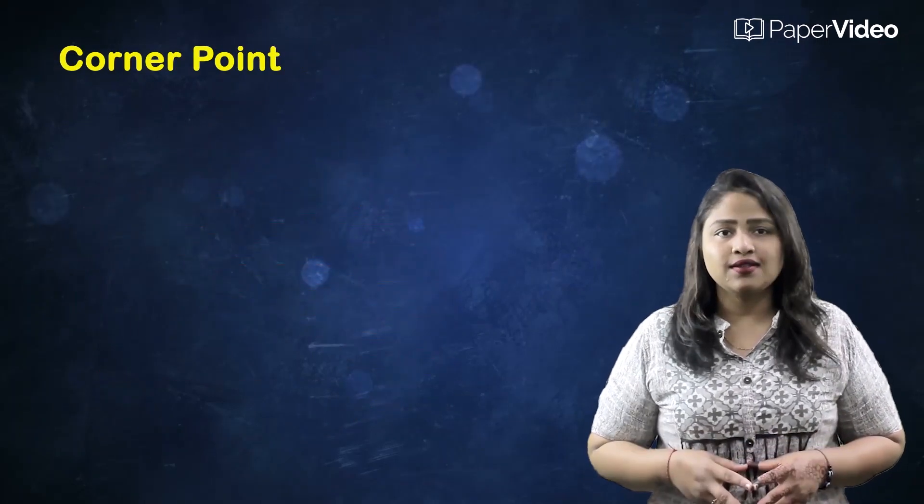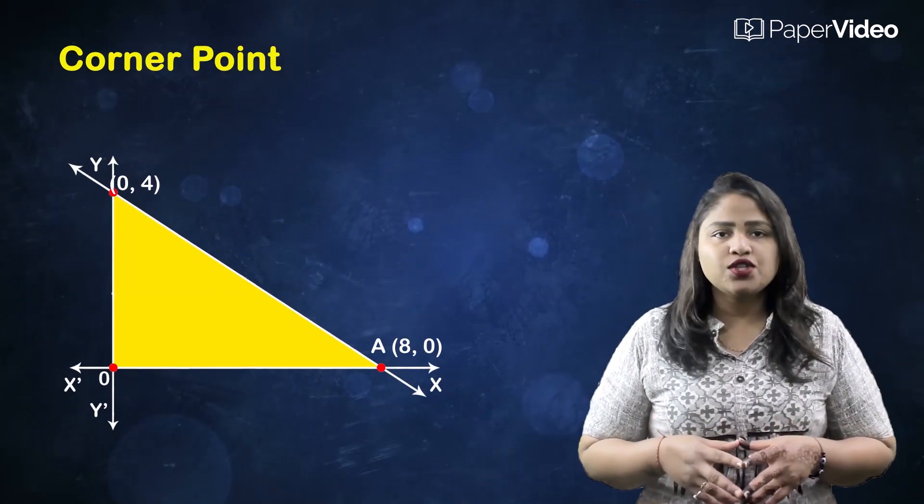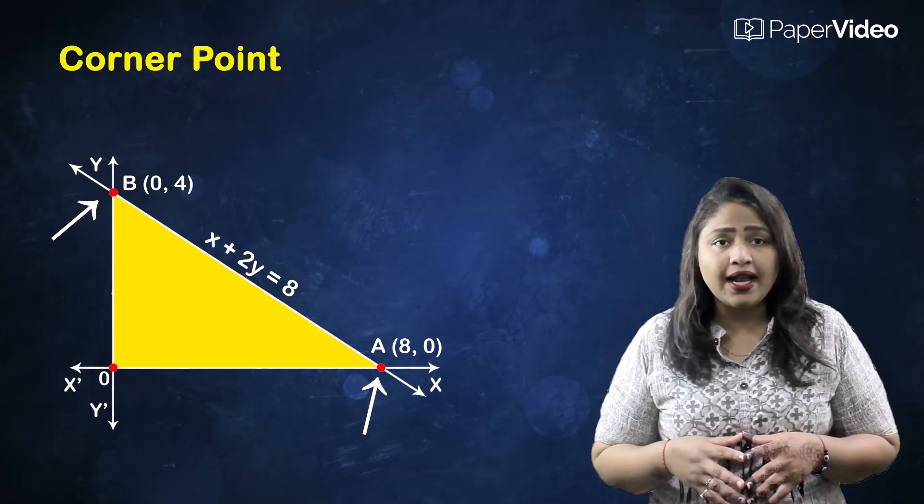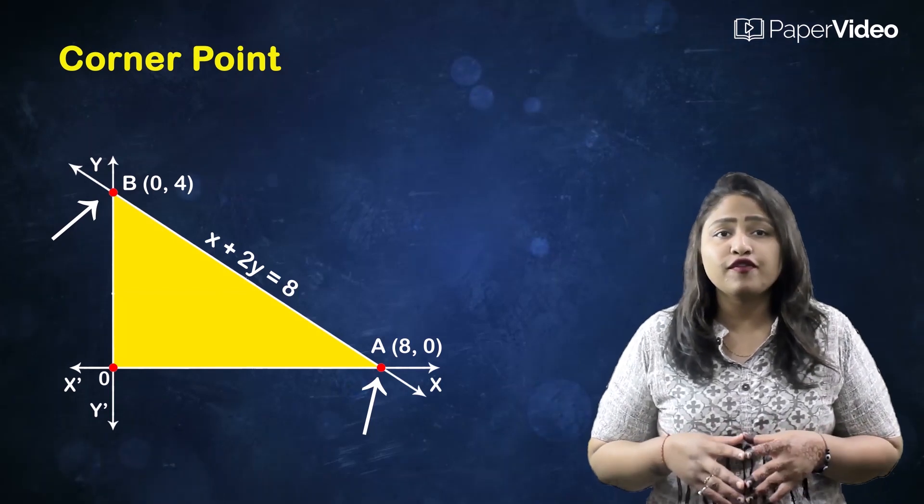Next is corner point. A point in the region which is the intersection of two boundary lines is called the corner point of a feasible region.